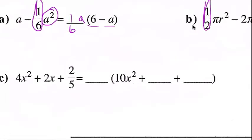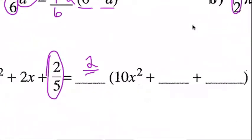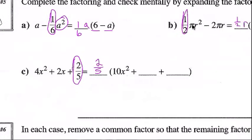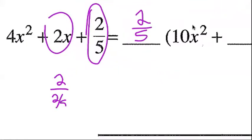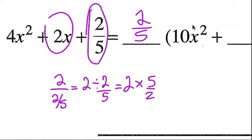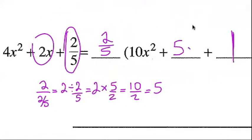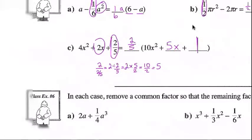Question c: we're trying to get rid of fractions, so we factor out (2/5). Dividing: (2/5) ÷ (2/5) = 1. For the second term, 2x ÷ (2/5): multiply by the reciprocal — 2 × 5/2 = 10/2 = 5. So this gives us 5x. Final answer: (2/5)(1 + 5x).